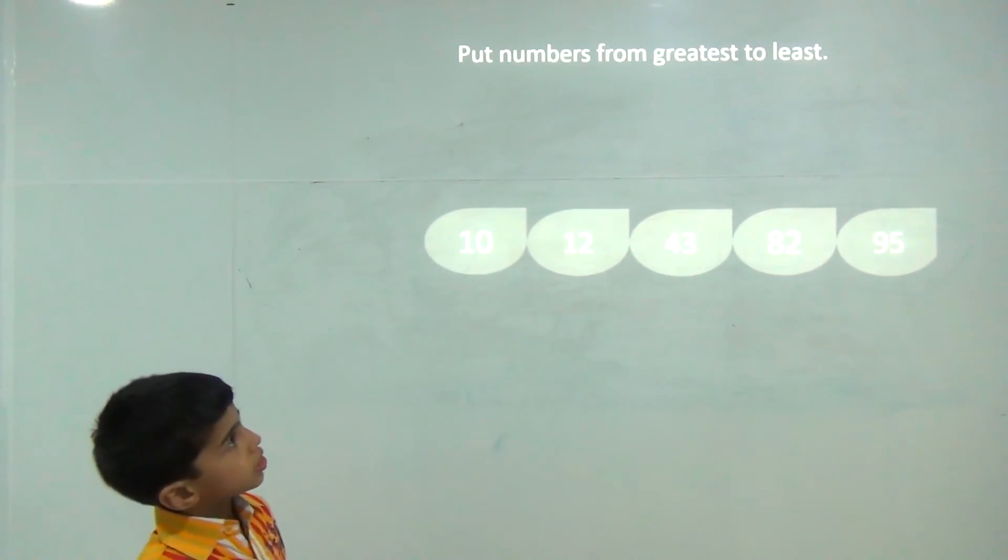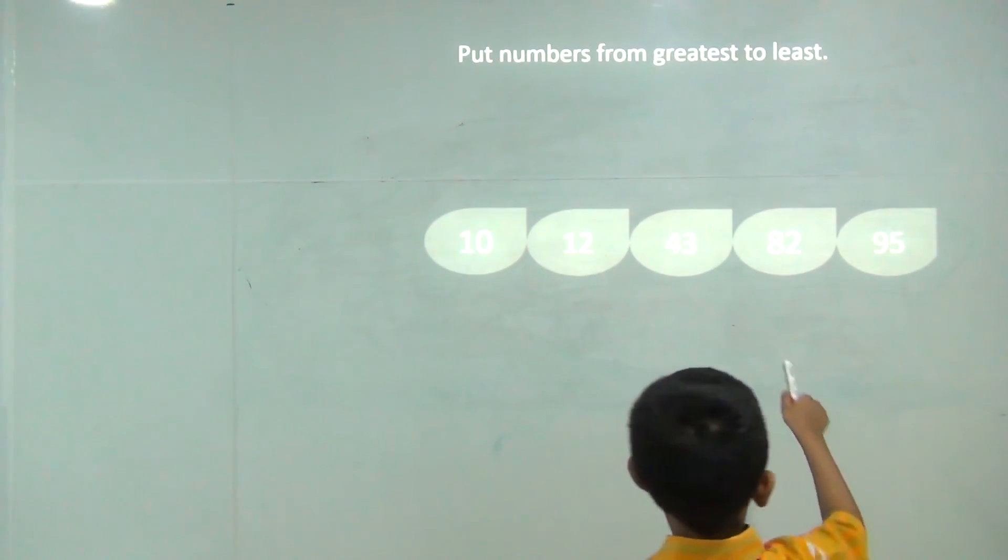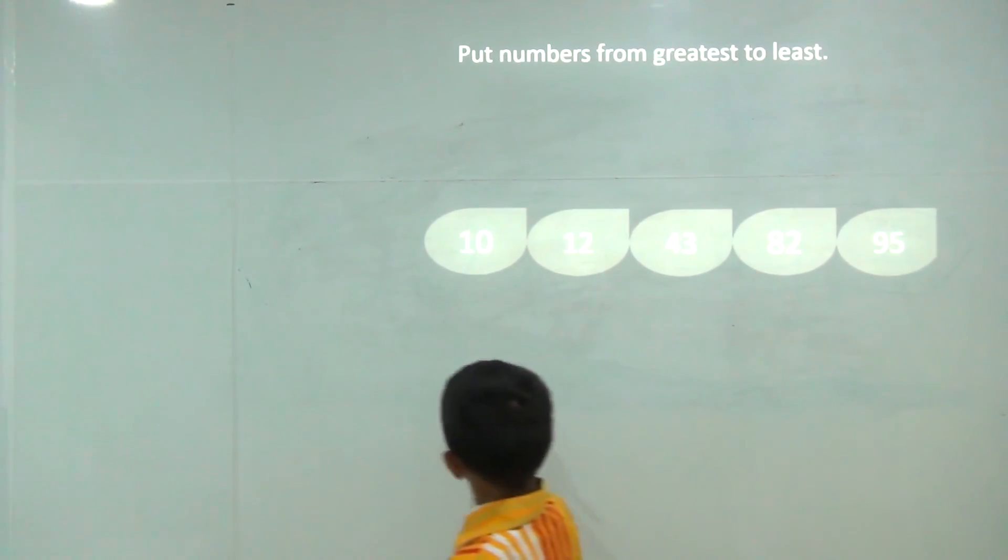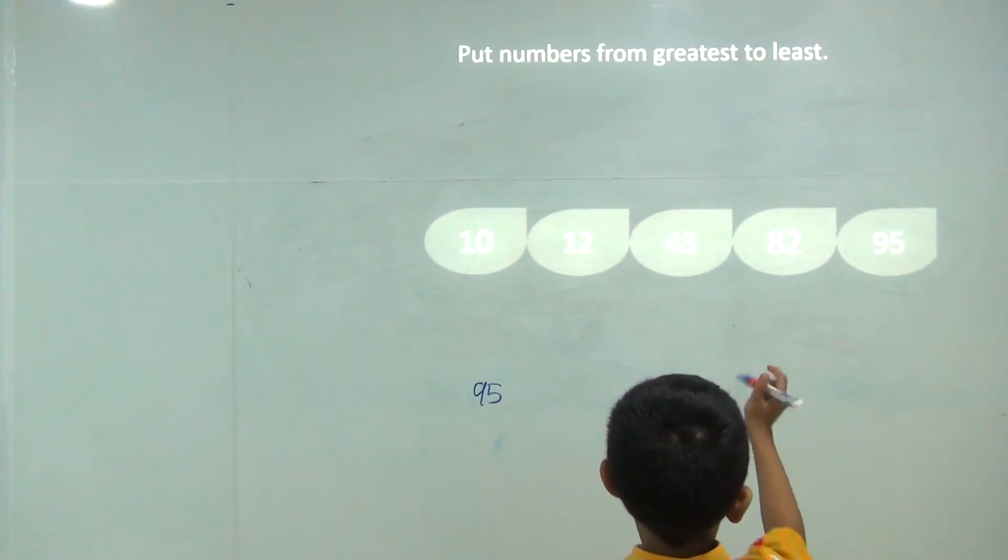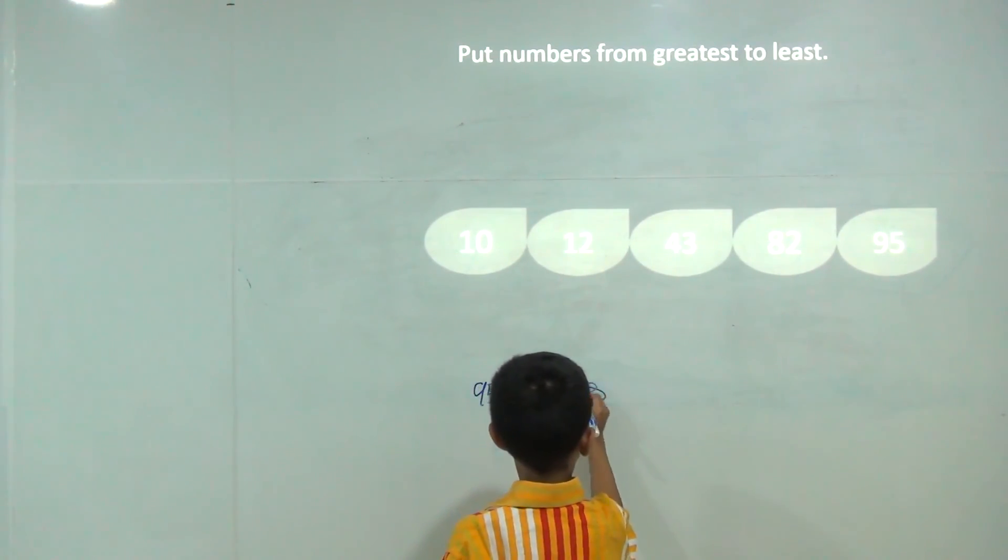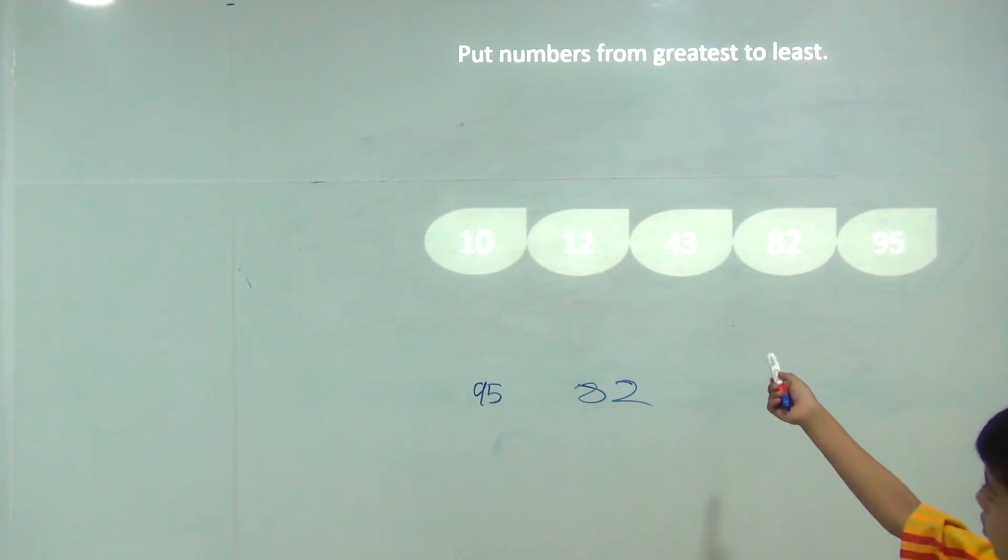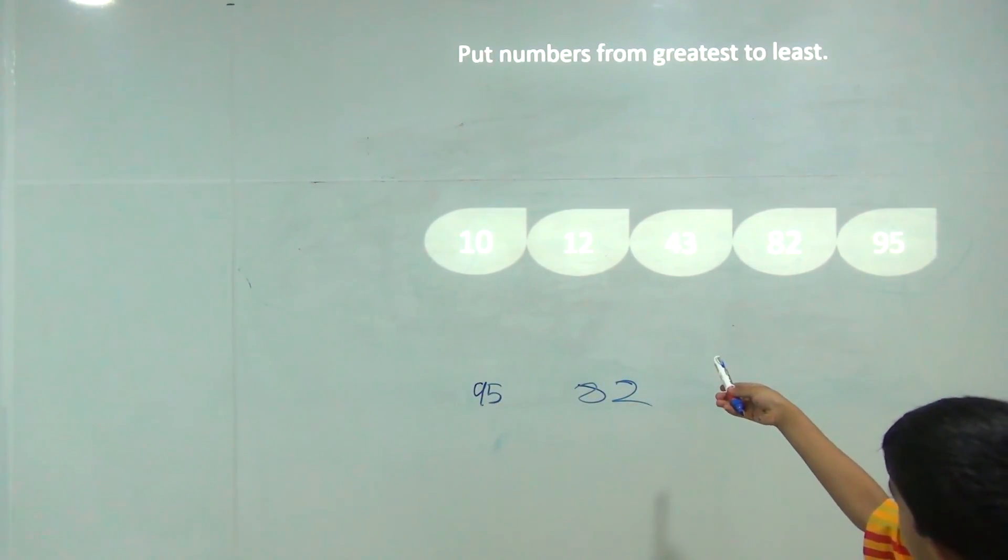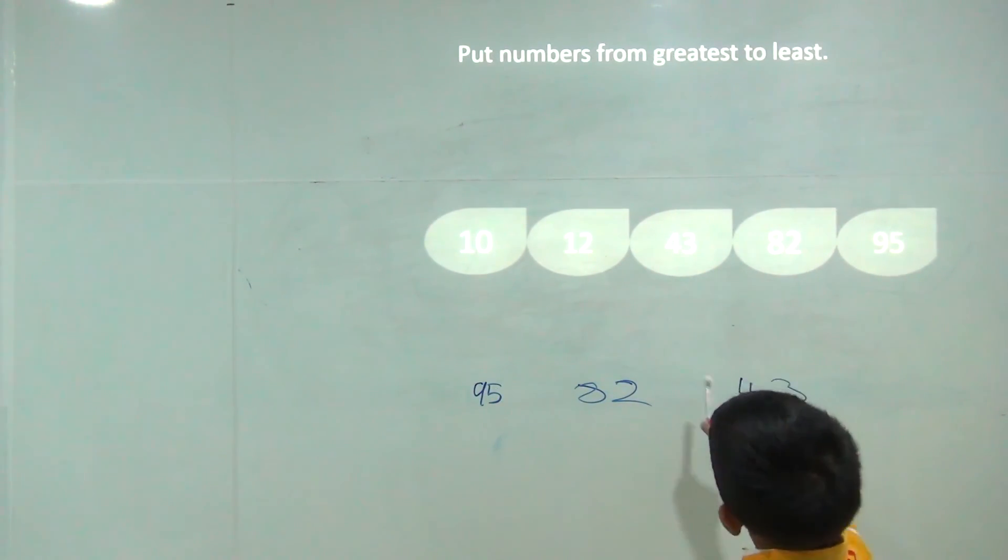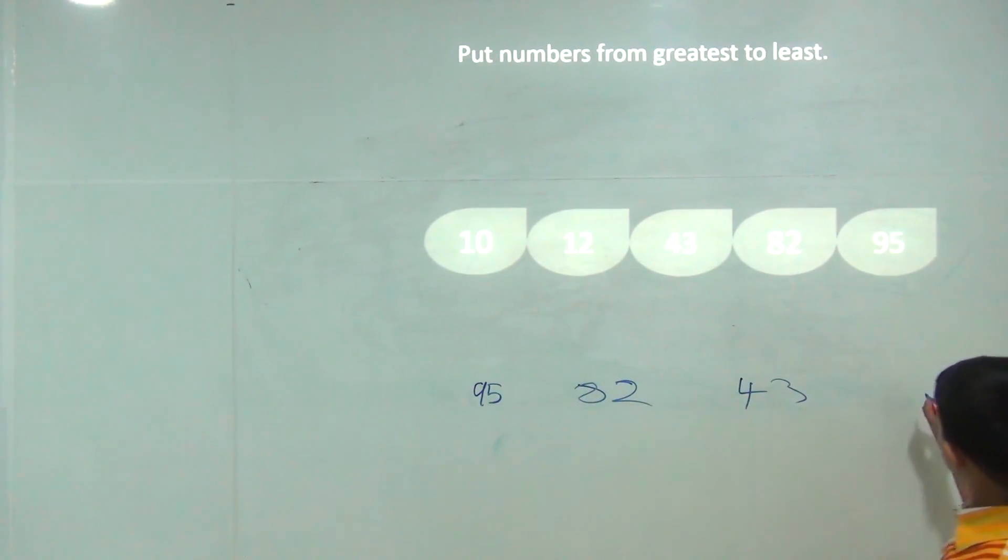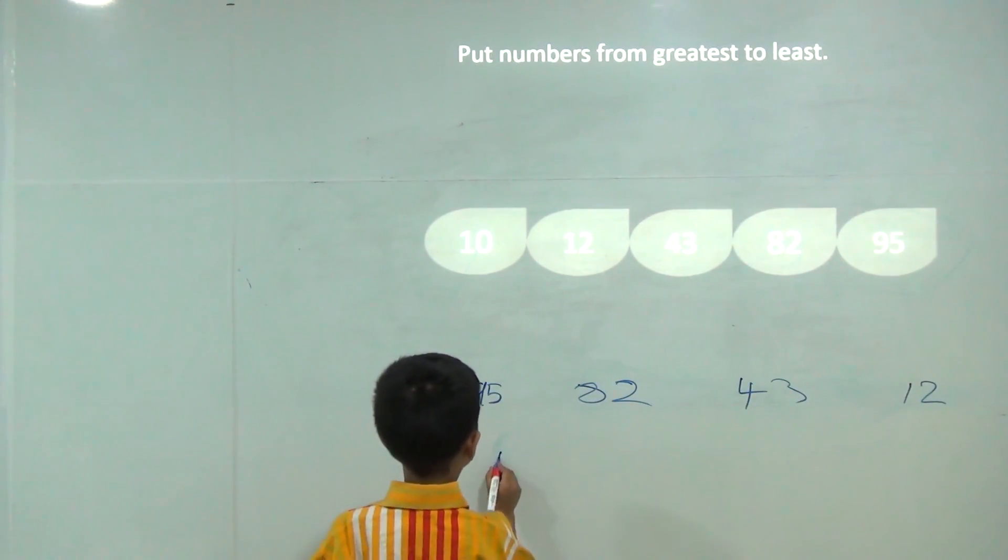The largest number is 59, then 56, then 43. Smaller than 43 is 12, smaller than 12 is 10.